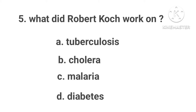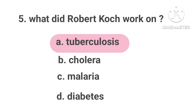What did Robert Koch work on? Option A: Tuberculosis. Option B: Cholera. Option C: Malaria. Option D: Diabetes. Correct answer is Option A.